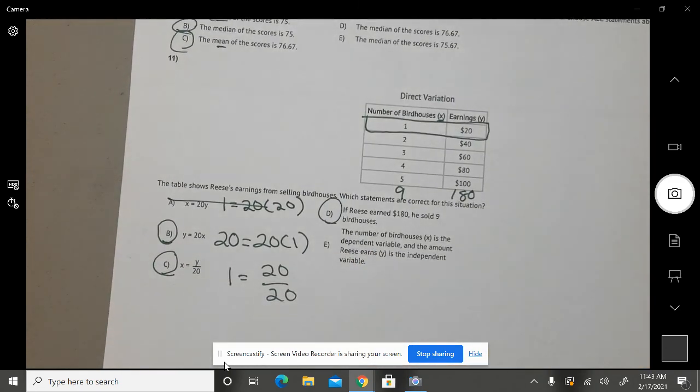E says the number of birdhouses, X, is the dependent variable, and the amount Reese earned is the independent variable. No, it's not. The money will always be your dependent variable because it's going to depend. Your money, how much you make, depends on how much you sell. Right? All right.